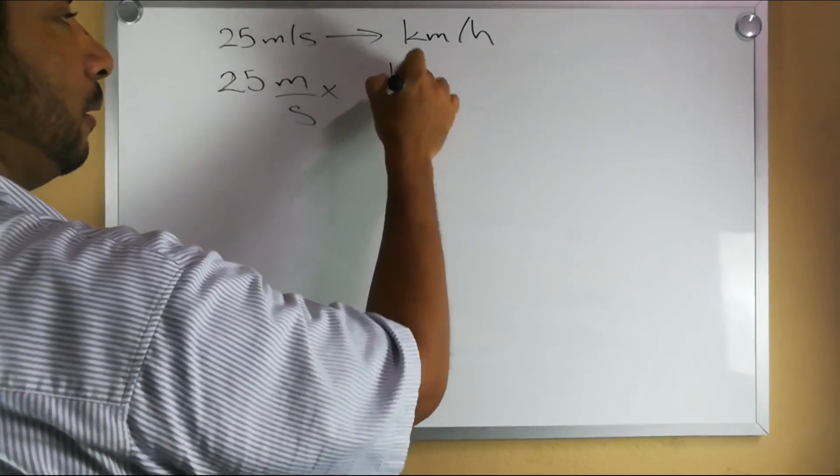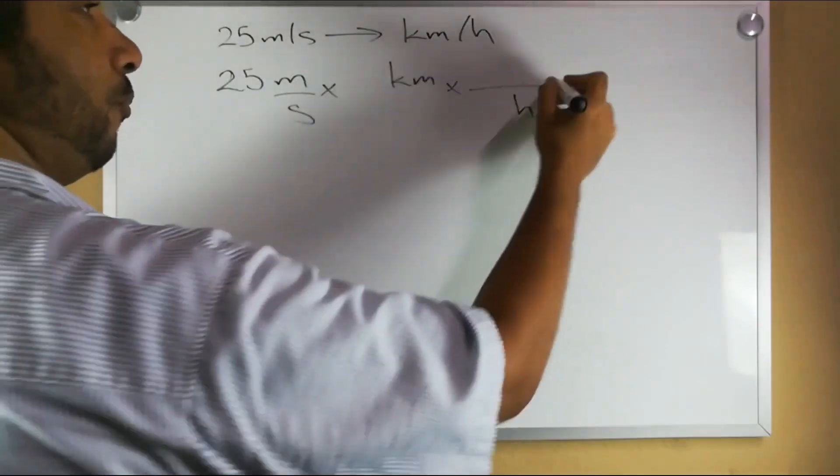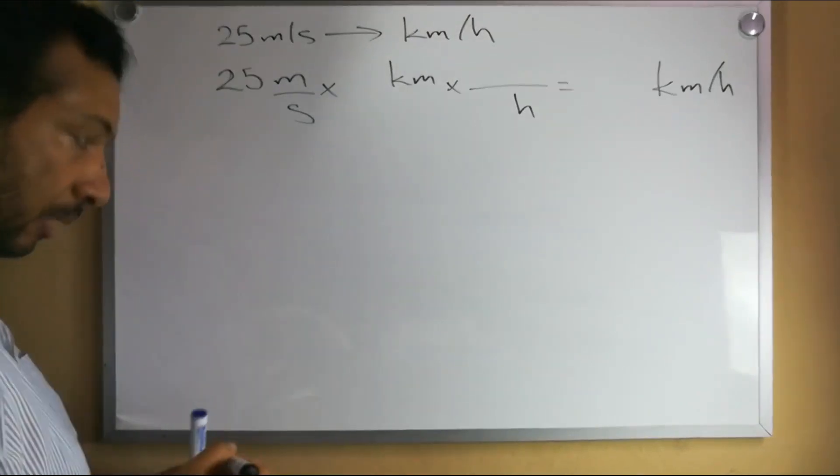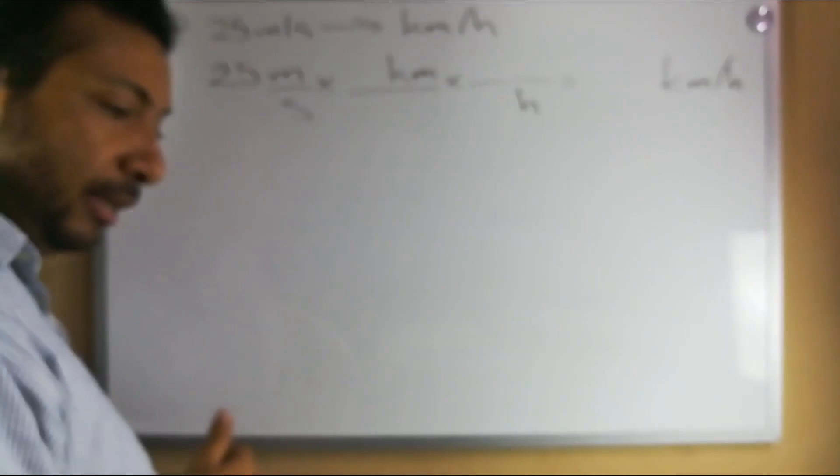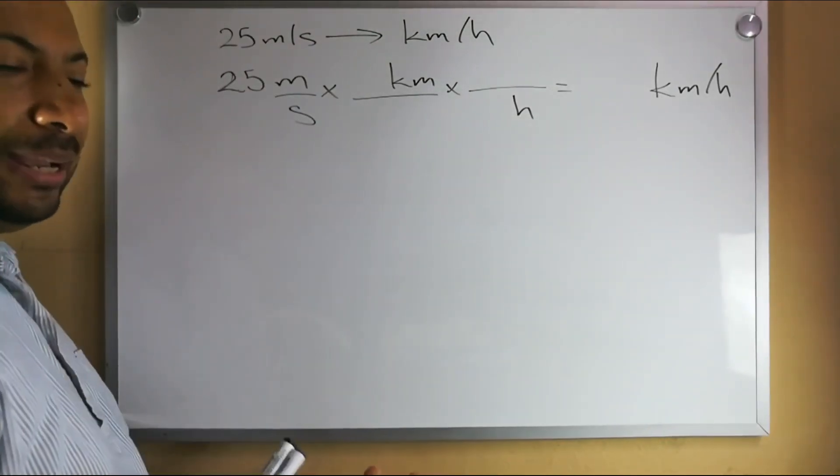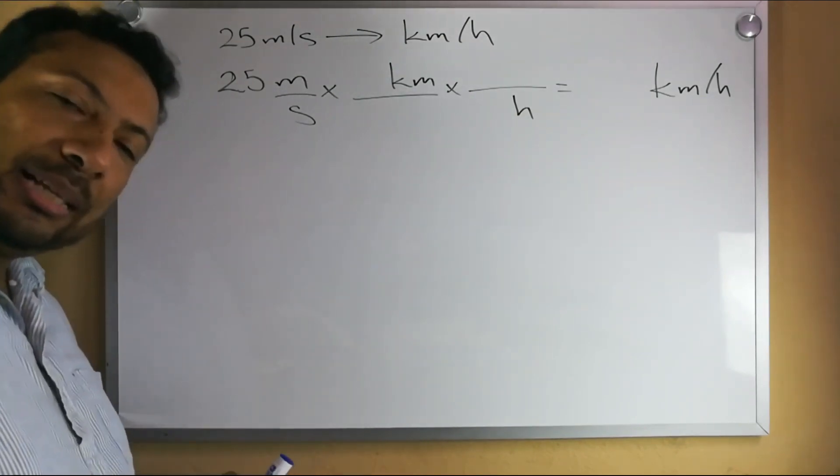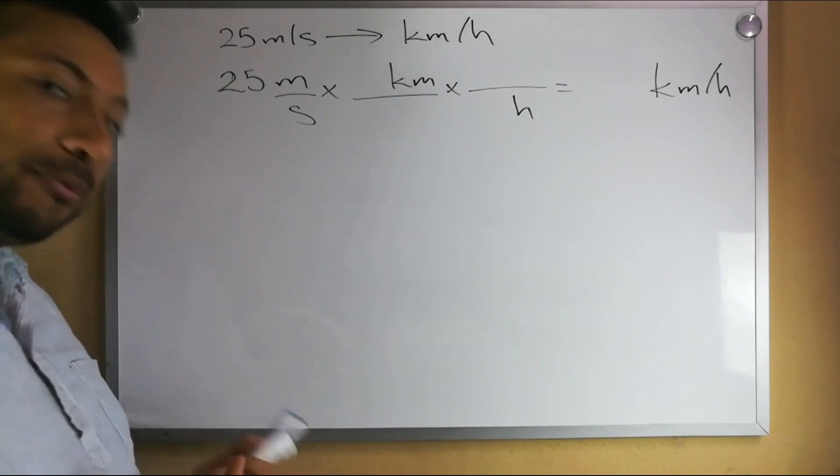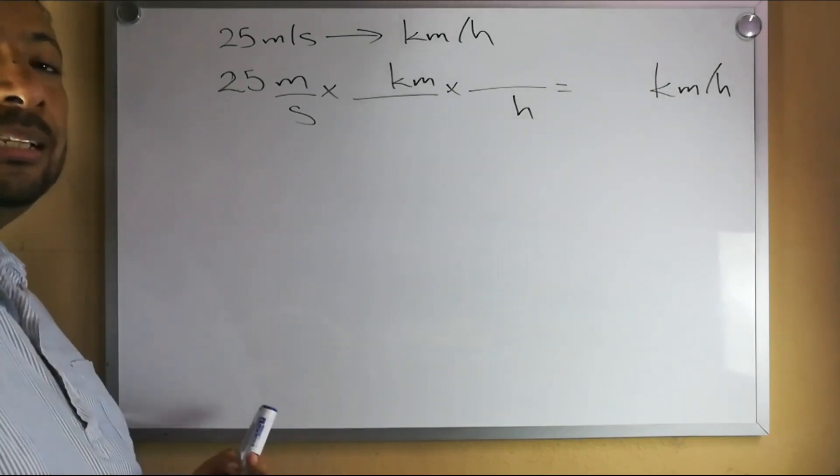We want to get kilometers per hour as our final units. How we do this is we multiply by one. The trick in mathematics that works wonders. What do I mean by it's a trick? Well the good thing about one is that it is anything of equivalent value divided by itself. So 5 divided by 5 is 1, pi divided by pi is 1, anything that is of equivalent value divided by itself is 1.